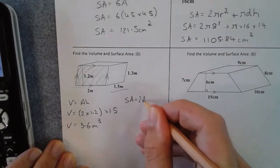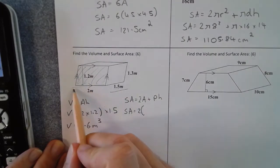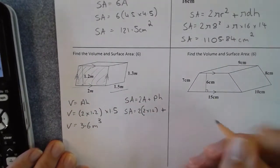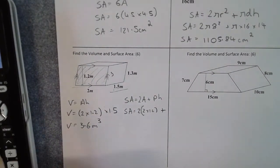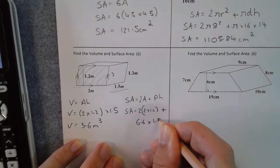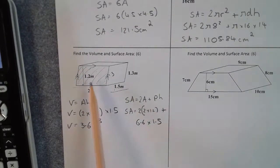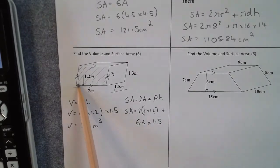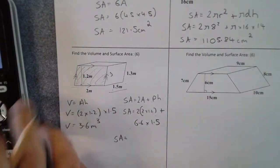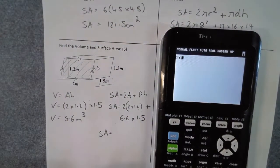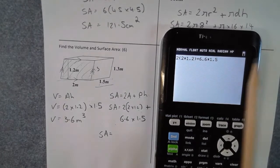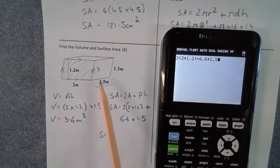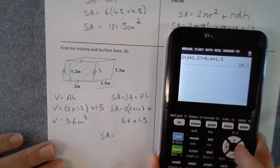For the surface area: 2A + Ph. Two lots of the face area — base times height — which is 2 times 1.2. The perimeter: 2 plus 1.3, doubled, is 6.6. Times the height of the prism — how far back it goes — which is 1.5. Typing all in: 2 times (2 times 1.2), plus 6.6 times 1.5 gives a surface area of 14.7 meters squared.